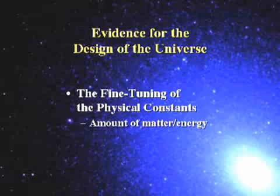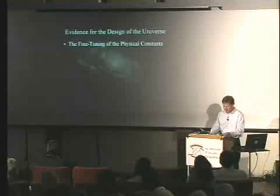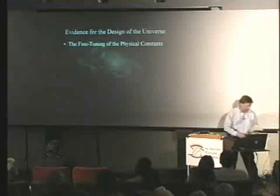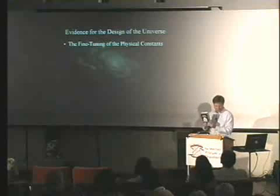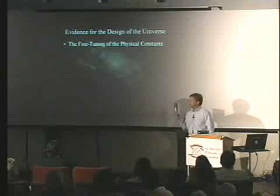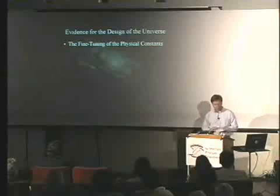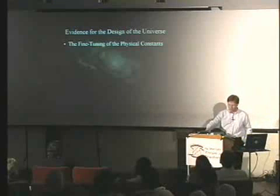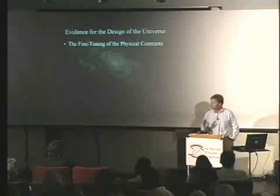The next thing I want to talk about is evidence for the design of the universe. This has been developed since about the 1980s. There's a scientific principle now called the Anthropic Principle. The definitive book on it is called the Anthropic Cosmological Principle — it's rather thick, small print, lots of mathematics. Astronomer John Barrow and physicist Frank Tipler mention over 100 examples of physical constants that have been fine-tuned to allow the universe to exist.